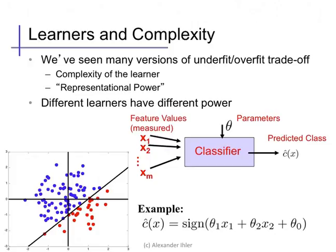When we talk about the complexity of a learner, we usually mean its representational power, both its ability to learn a wide variety of input-output relationships and, at an extreme, its ability to memorize or overfit to the data.